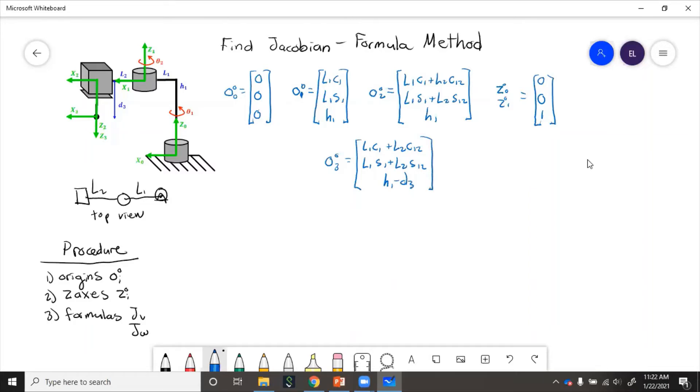And the z-axis vector for joint two this time is pointing down and so is joint three. So that will just be zero, zero, and minus one.